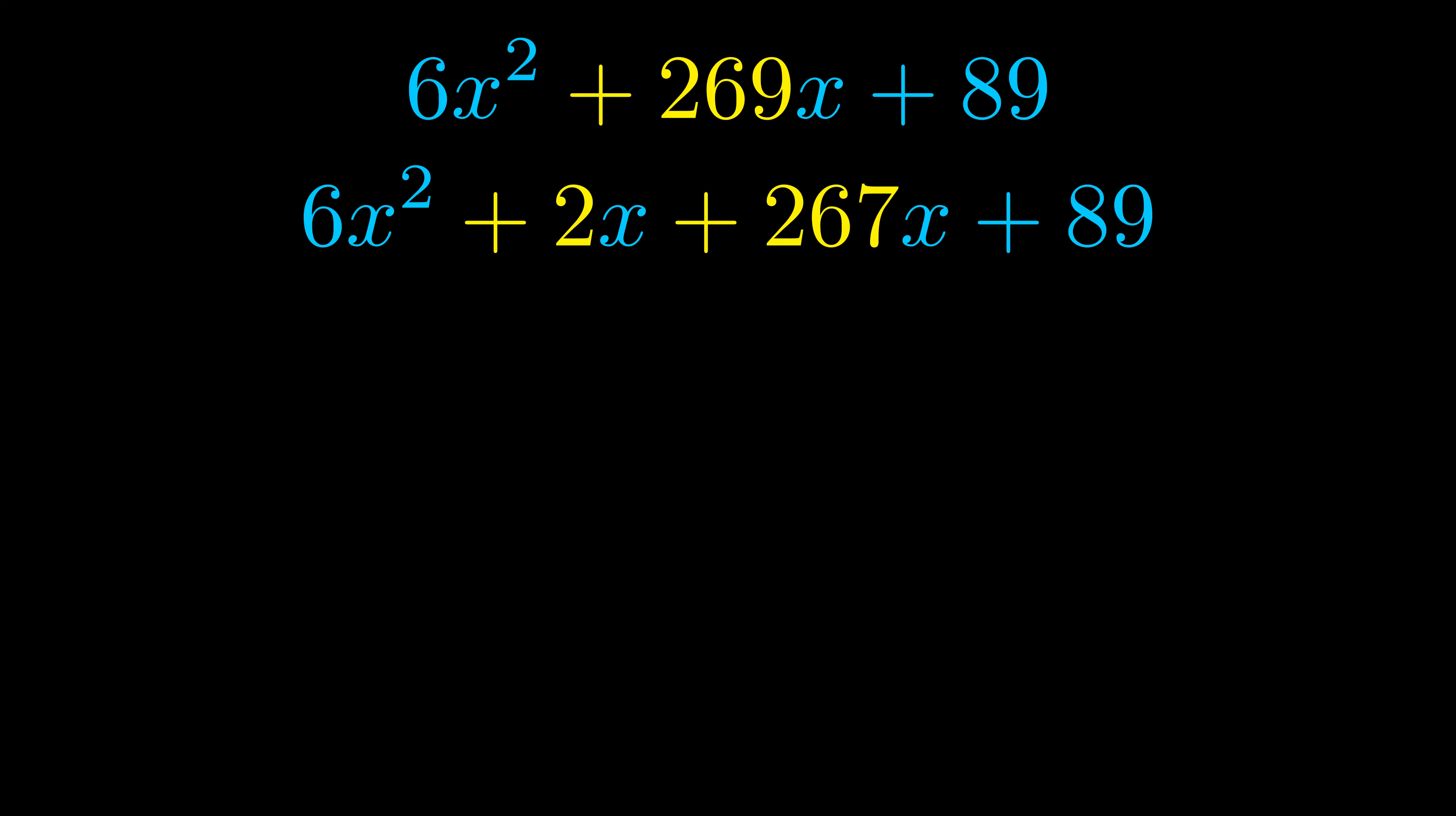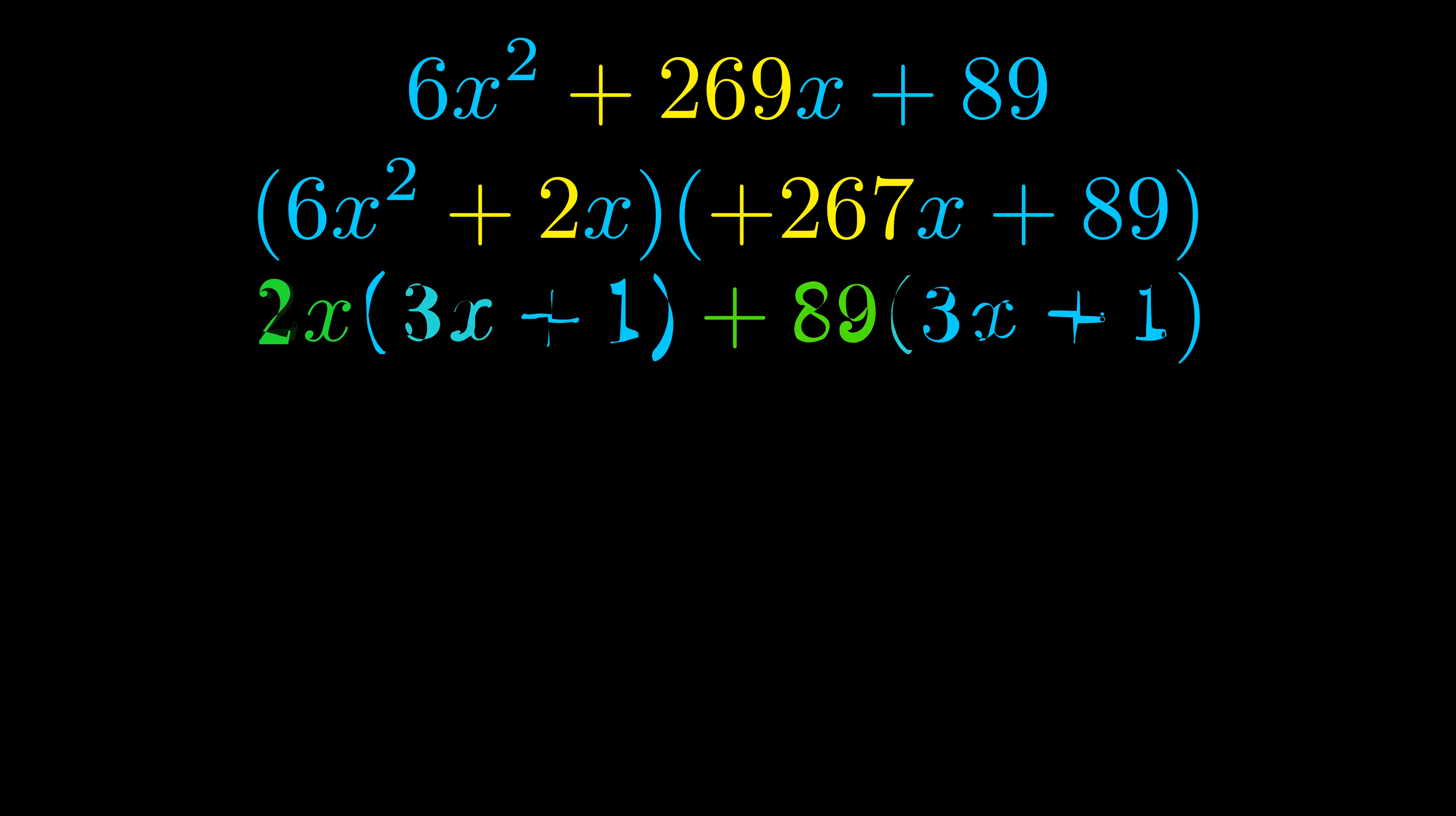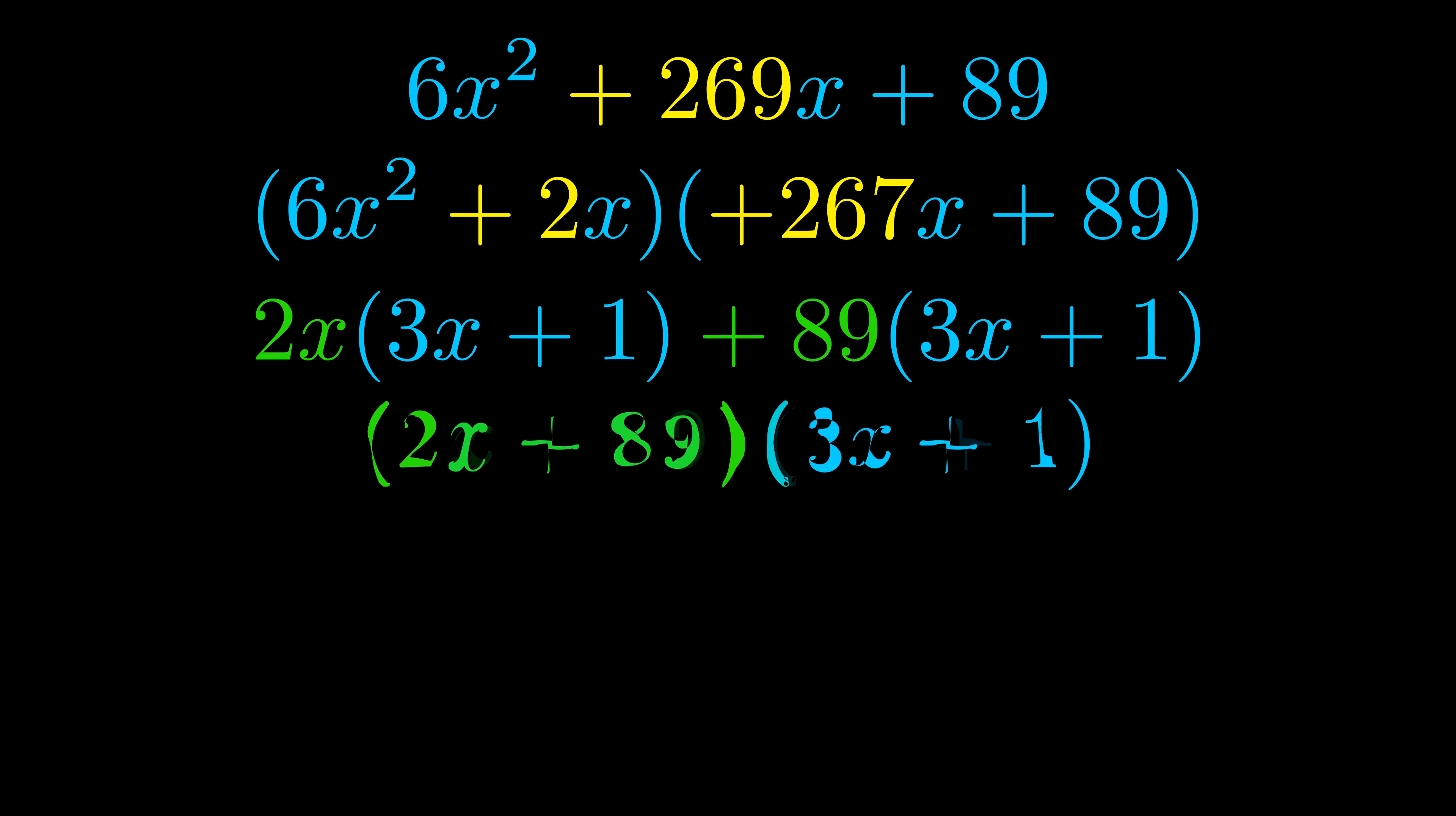Once we've done this we go ahead and put parentheses around the first term and the last term and we do that so that we can take the greatest common factor out of both terms. We can see the greatest common factor is now outside in green. Notice also how what remains inside of the parentheses is the same in both cases. The blue values are the same.